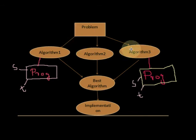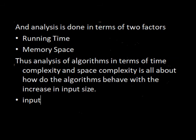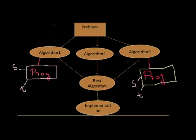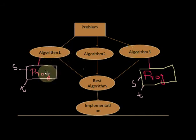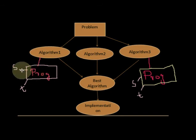The algorithm which consumes less running time and less memory space among the set is considered to be the best algorithm. Analysis of algorithms is done in terms of two factors: running time and memory space. The algorithm whose corresponding program consumes less running time and less memory space while running on the machine is considered to be the best algorithm.